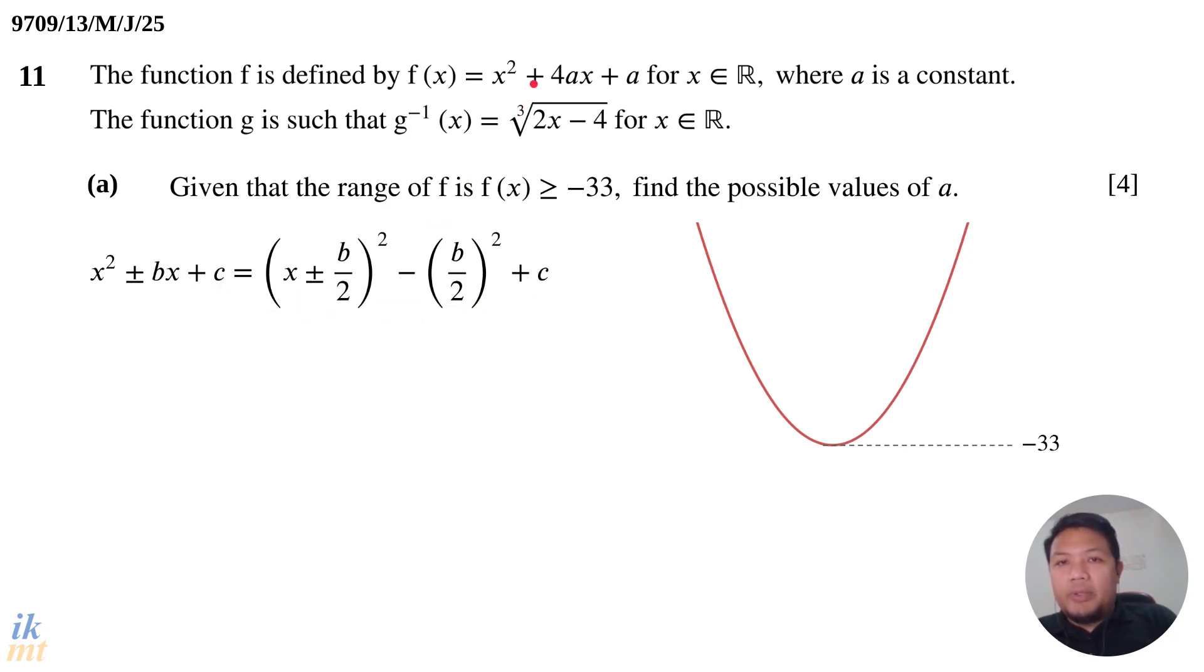Now, in the completed square form, everything outside of this bracket is the minimum value. So this is why we want the completed square form. So, negative 4a squared plus a, this entire part here, is the minimum value of the quadratic.